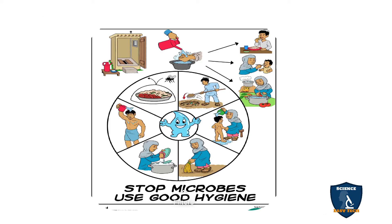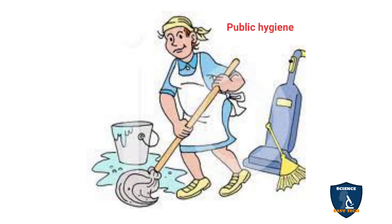To stop microbes, use good hygiene. The steps you can follow include brushing your teeth, washing your hands, taking a bath, and putting waste in the dustbin. This is the proper way to stop microbes. While using good hygiene, pathogenic microbes won't spread disease and won't survive in the atmosphere. This applies at home as well as in public, where people involved in sanitation departments are cleaning roads to maintain hygiene in public places.